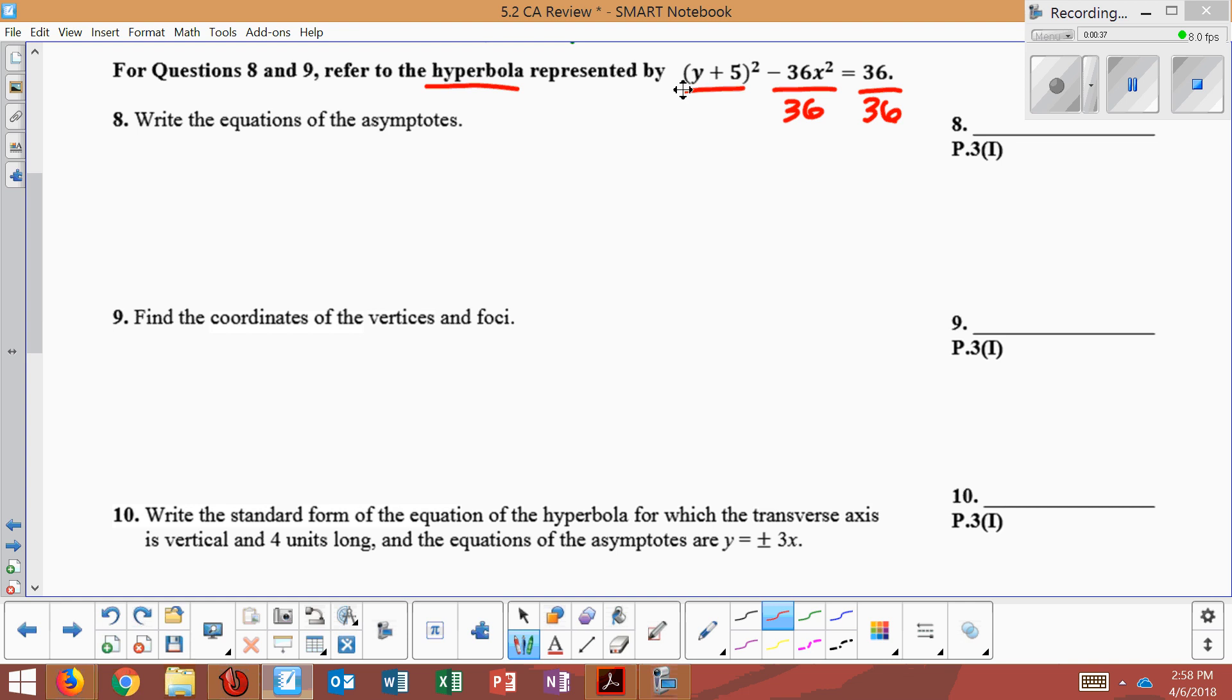When I do this, I've now got my equation in the right form. I have y plus 5 quantity squared over 36 minus x squared over 1, which obviously I could simplify but I'll just leave it like that, equals 1. I now have it in the right form.